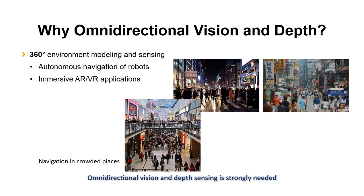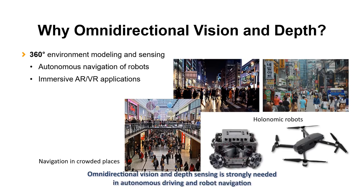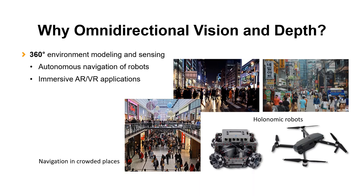Omnidirectional vision and depth sensing is strongly needed in autonomous driving and robot navigation to detect obstacles and surrounding structures. For example, when you are driving, you watch all directions, not only the front. It is also used for various AR/VR applications.